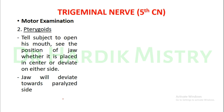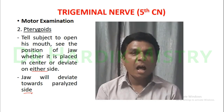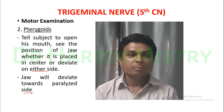To check the pterygoids, tell the subject to open his mouth and observe the position of the jaw — whether it is placed in the center or deviates to one side. The jaw will deviate towards the paralyzed side because on the paralyzed side, the healthy pterygoid muscles contract, pushing the jaw towards the affected side. Simply tell the subject to open his mouth and observe whether the jaw is central or deviated.